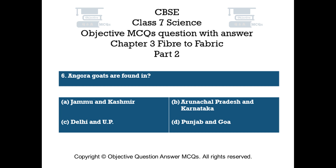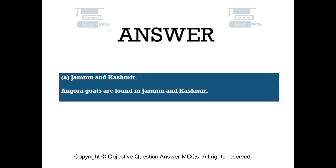Question number 6. Angora goats are found in. Option A: Jammu and Kashmir. Option B: Arunachal Pradesh and Karnataka. Option C: Delhi and UP. Option D: Punjab and Goa. The right answer is Option A — Jammu and Kashmir. Angora goats are found in Jammu and Kashmir.